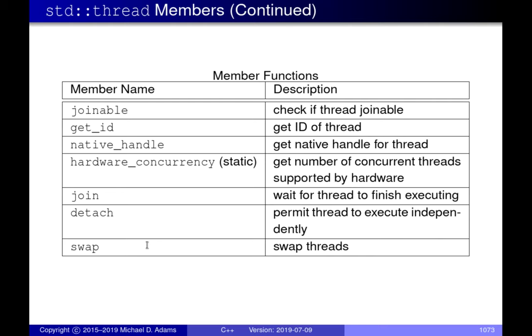There's a function called joinable which is a predicate returning a boolean to indicate whether the thread is joinable or not. There's also a member function for getting the ID, and a static member function called hardware_concurrency which returns the number of concurrent threads the hardware can support - though it may return zero. The join member function performs a join operation which waits for a thread to finish executing and marks it unjoinable. The detach operation dissociates a thread of execution from the thread object, lets it run independently, and also marks the thread object as unjoinable.